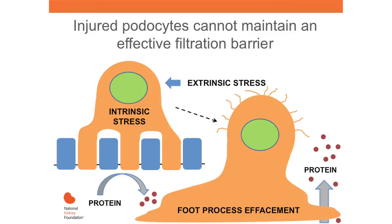The cellular injury to the podocyte can either be intrinsic, such as genetic or metabolic causes, or extrinsic, such as mechanical stresses or immune injury. Injured podocytes can't maintain their differentiated phenotype. There's effacement of foot processes and loss of slit diaphragms, and this leads to massive protein losses in the urine.